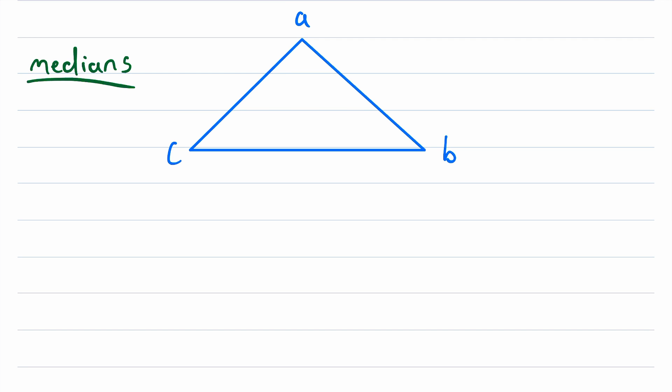A median of a triangle is quite simply a line segment from a vertex on the triangle to the midpoint of the opposite side.